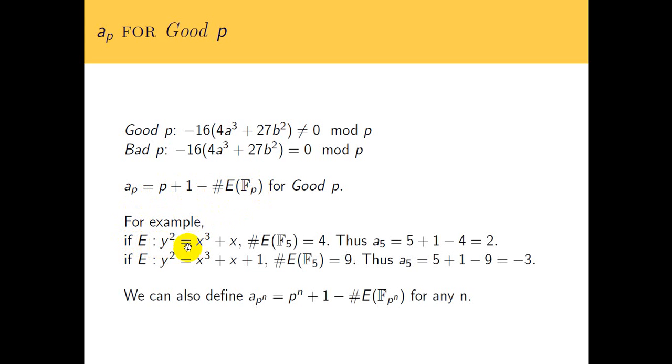That looks very similar to what we talked about in the last slide. For example, if we have an elliptic curve, here's an example. You can show pretty quickly with pen and paper that the only solutions to this mod 5 are, well, there's four of them. Don't forget to include the identity at infinity, so there's four total. The way we define a_5, we take p plus 1 minus the size, and that gives us our a_p.